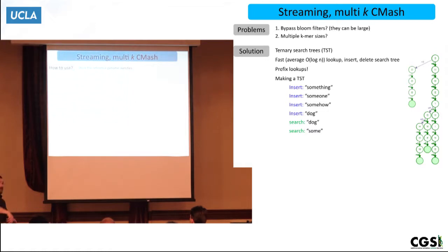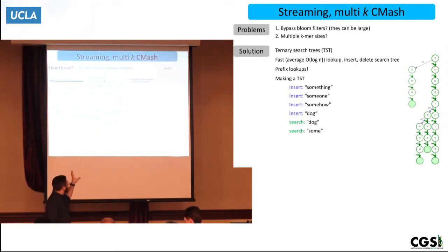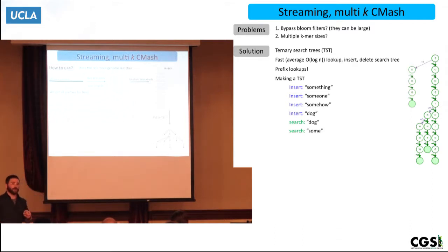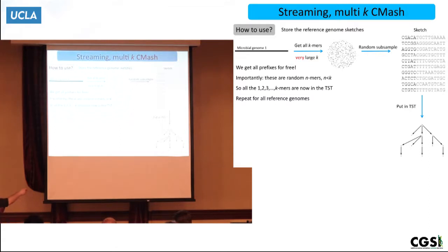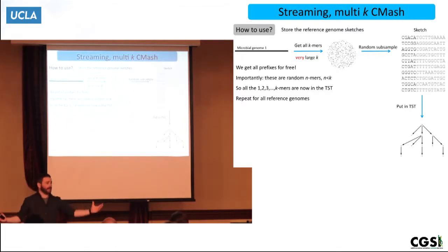I'm going to use the ternary search tree to store those random subsamplings — the sketches. Take one of your microbial genomes, get all the K-mers for some really large K, get a sketch, and stick it into the ternary search tree. The cool thing is all the prefixes are also searchable. If you randomly subsample long K-mers and take their prefixes, it's still a random subsampling — possibly with some duplicates, but these are random N-mers for some N less than K. Taking length-one, length-two, etc. prefixes gives you a random subsampling of K-mers for a whole span of K-mer sizes.